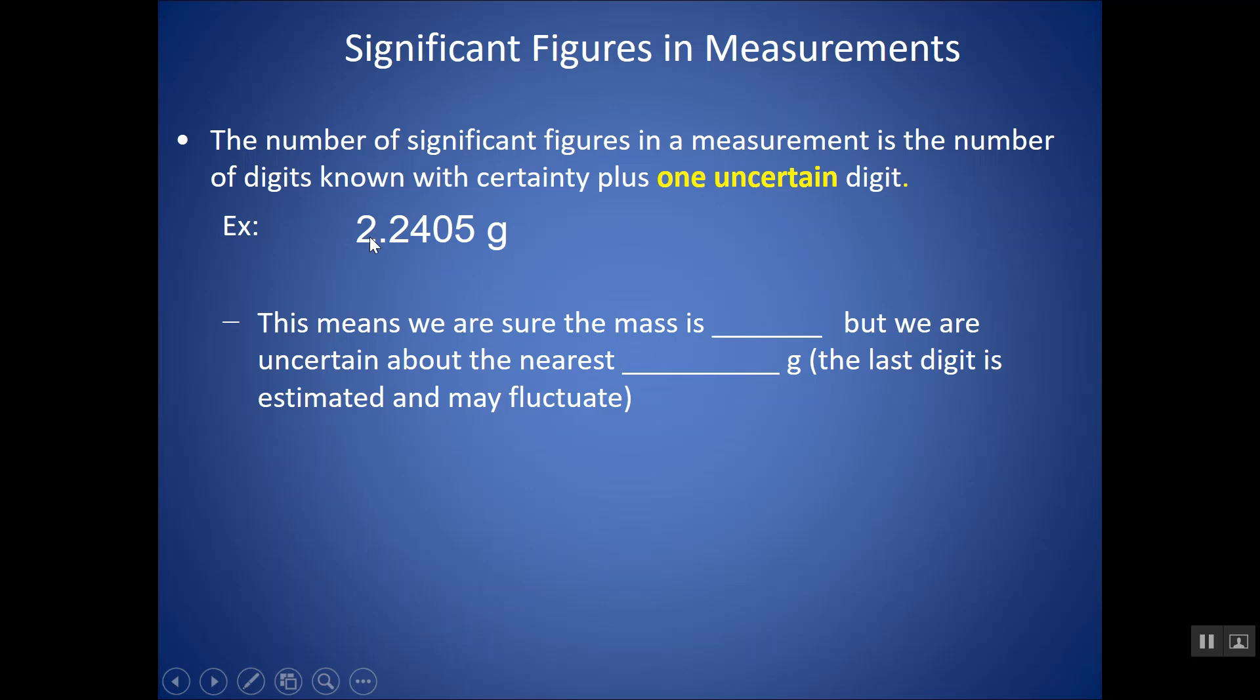So essentially if I see this measurement, 2.2405 grams, the first part of the number, all but the last digit, are known with certainty. Each time I weigh this sample, those numbers should be the same on this piece of equipment.